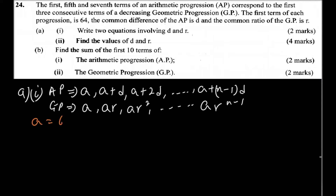We've been told that a equals 64, which is the first term. The first term of the AP is a, the fifth term is a plus 4d (substituting n=5: 5 minus 1 is 4), and the seventh term is a plus 6d (7 minus 1 is 6). These correspond to the first three consecutive terms of the GP: a, ar, and ar².